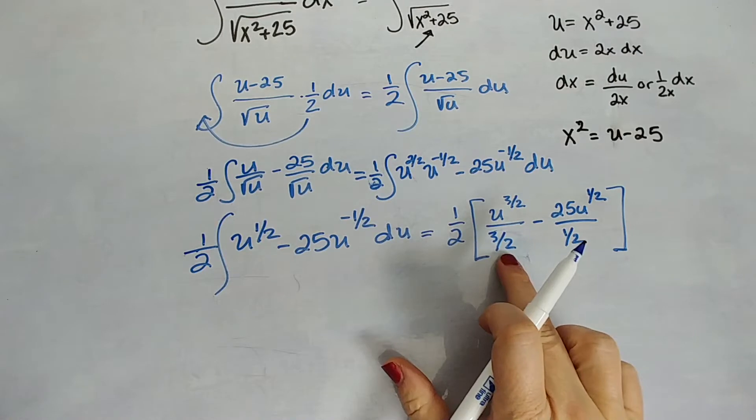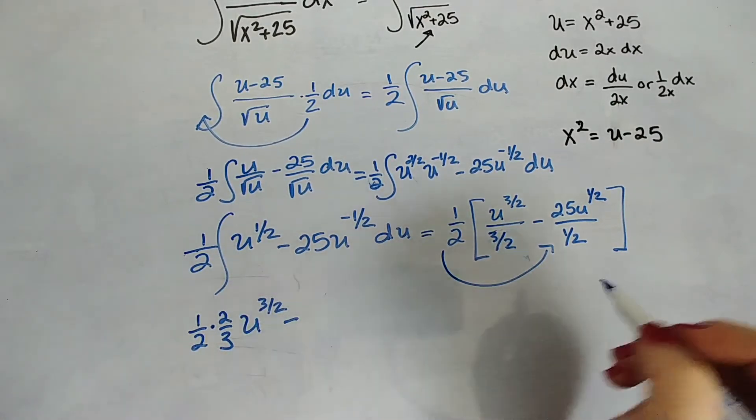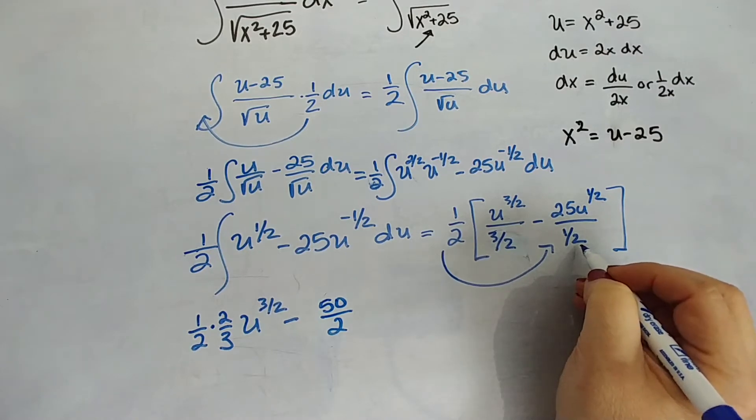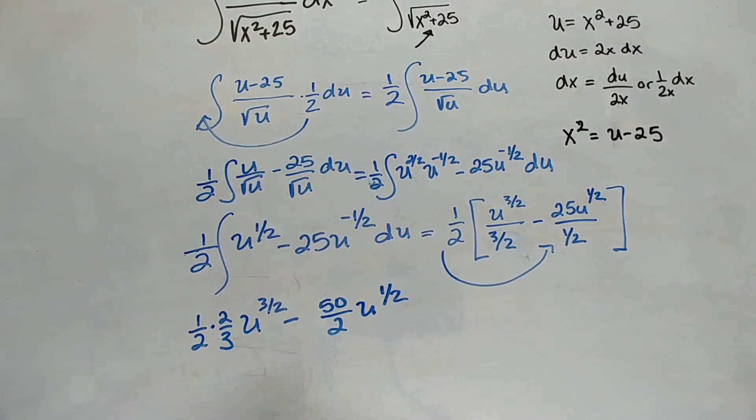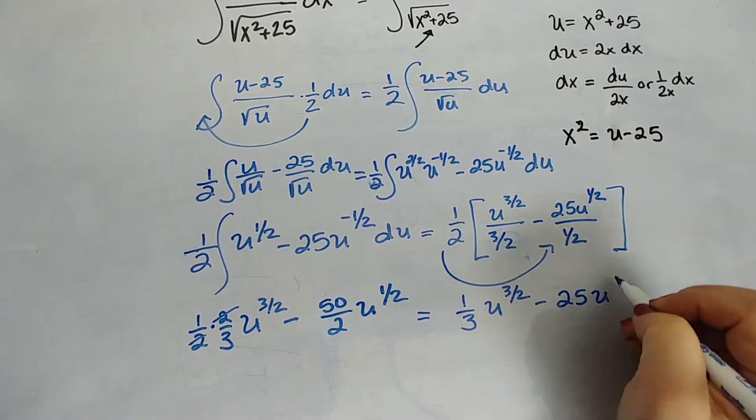All right, so let's do this. Now I'm going to take this 3 halves that's in the denominator and actually multiply it as a 2 thirds. So I'm going to get 1 half out here, times 2 thirds. I'm going to distribute it throughout. So 50 over 2, because when I take 1 half in the denominator, I'm going to multiply by 2. So 50 over 2 u to the 1 half. So far, so good. Okay, we're going to divide out our 2s here, and we're going to get a 1 third that's attached to the u to the 3 halves. Minus 25 u to the 1 half.